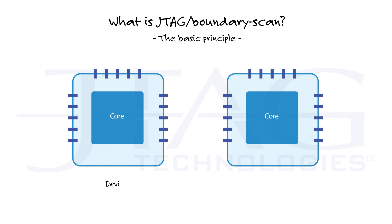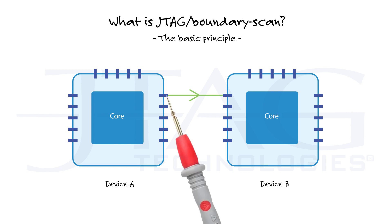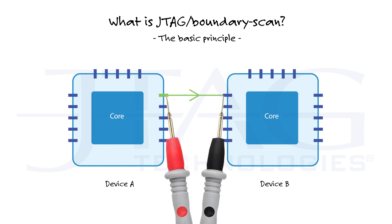Take a look at these two devices. An output pin of device A is connected to an input pin of device B. To verify this connection, you want to drive a value on the output pin of device A, and then check if you see that value on the input pin of device B. This way of testing is called a structural test. You need probing access to the pins.